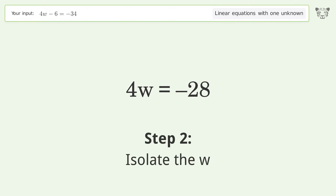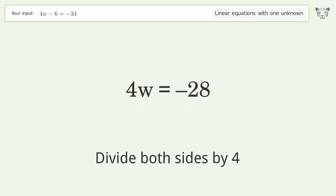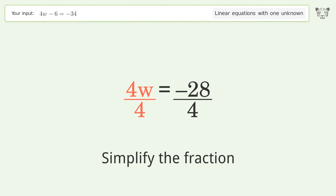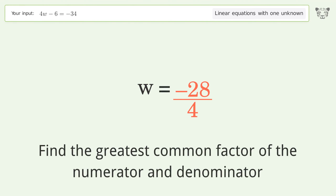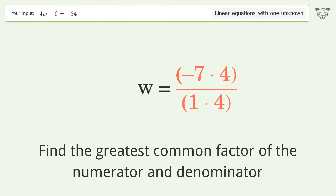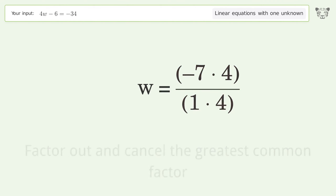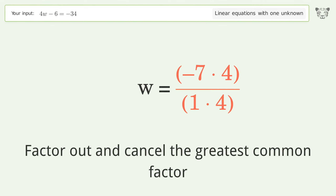Isolate w by dividing both sides by 4 and simplify the fraction. Find the greatest common factor of the numerator and denominator, then factor out and cancel the greatest common factor.